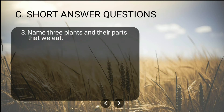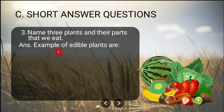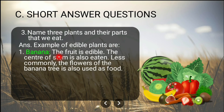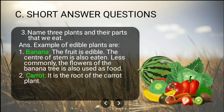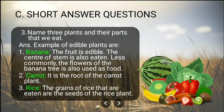Third question: Name three plants and their parts that we eat. Examples of edible plants are: banana — the fruit is edible, the center of the stem is also eaten, and the flowers are also used as food; carrot — it is the root that we eat; and rice — the grains we eat are the seeds of the rice plant.